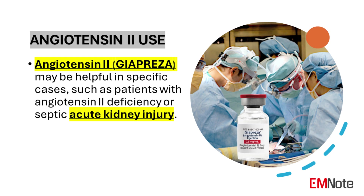Angiotensin 2. Angiotensin 2, a relatively recent addition to the vasopressor armamentarium, has shown promise in specific patient populations. It may be particularly beneficial in patients with angiotensin 2 deficiency, often manifested as hyperreninemia. Additionally, patients with septic acute kidney injury, which is often associated with decreased angiotensin 2 levels, might experience improved outcomes with angiotensin 2 therapy.